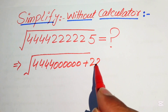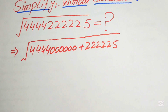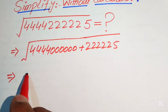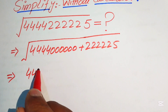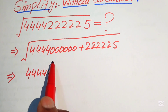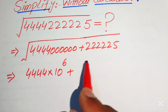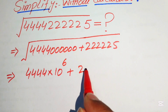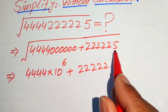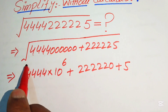We break this number again and write 4444 multiplied by 10 raised to power 6. Then we break the second number and write it as 22222 plus 10, plus 5, under the whole square root.